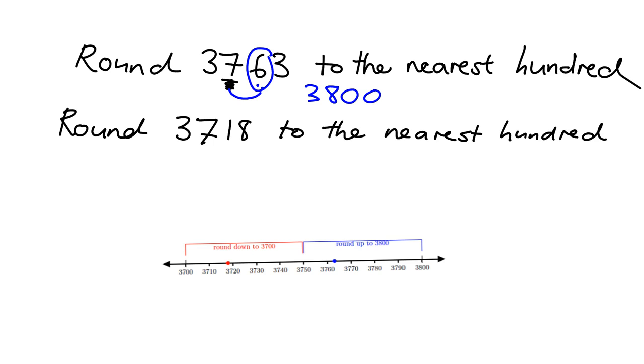Here, again, we're rounding to the nearest 100. We need to look one to the right of that. The number to the right is a 1. That is less than 5, so we're going to round down to 3,700.